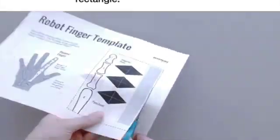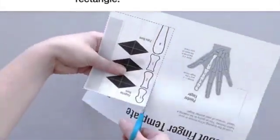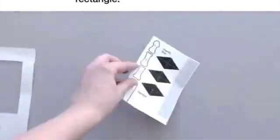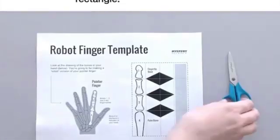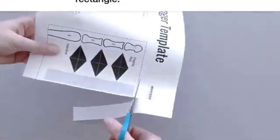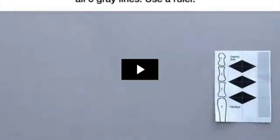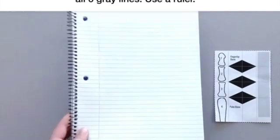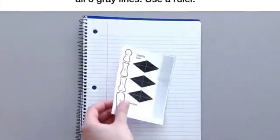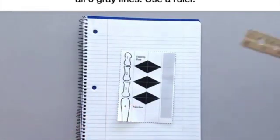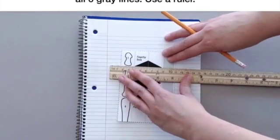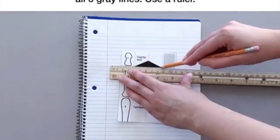Cut along the dashed lines to cut out the rectangle. Put the rectangle on your notebook. Trace all six gray lines. Use a ruler to help you make the lines straight like this.